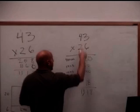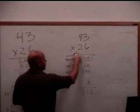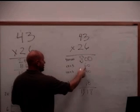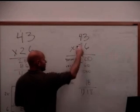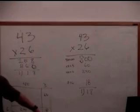You take 20 times 40, and you get 800. Then you take 20 times 3, and you get 60. Then you take 40 times 6, and you get 240. Then you take 3 times 6, and you get 18. You're able to add it up, and you get the same thing.